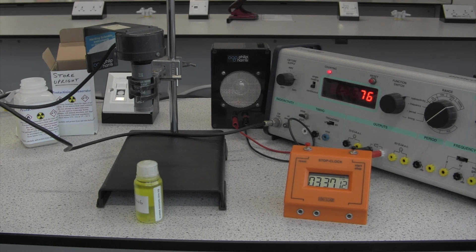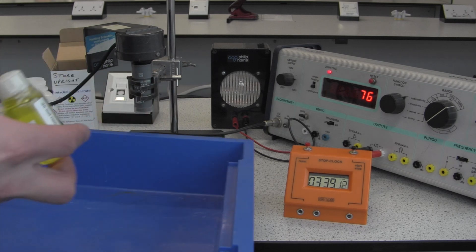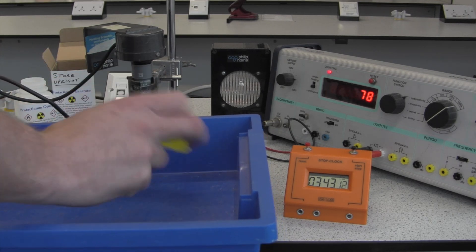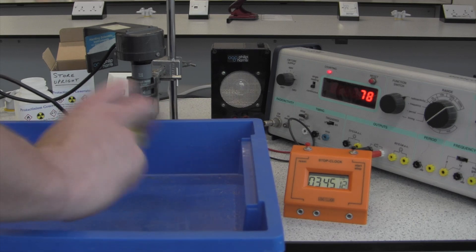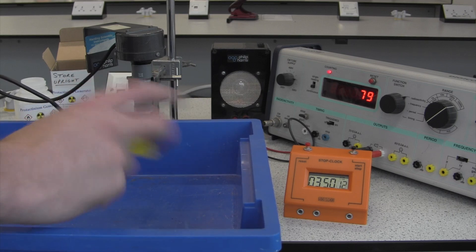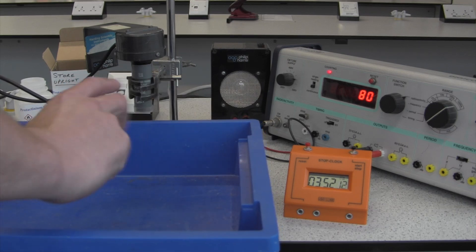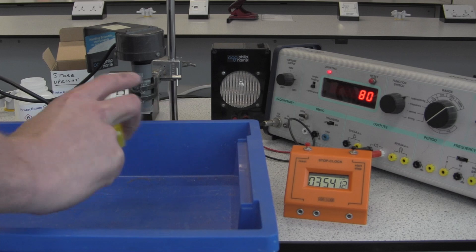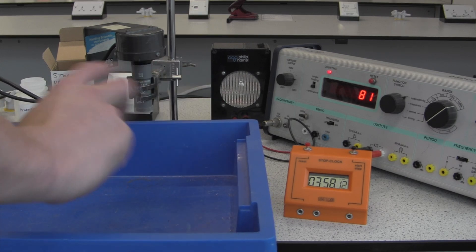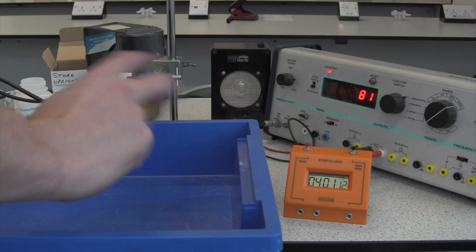The safest way to do that, just to avoid any mishaps, is to get a tray and shake it over the tray. That means if there's any problems with the bottle breaking or anything like that, then we haven't contaminated the area around. And we have only contaminated the tray, so it's easier to clean up.